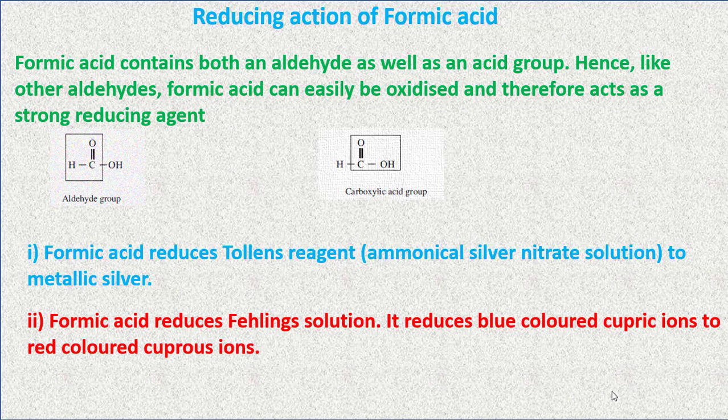Formic acid also reduces Fehling's solution — it reduces the blue-colored cupric ion to red-colored cuprous oxide. This is the test for the reducing property of formic acid. In summary, formic acid contains both the aldehyde as well as the acid group, so it acts as a very good reducing agent. Please like, share, and subscribe to this channel. Thank you for watching.